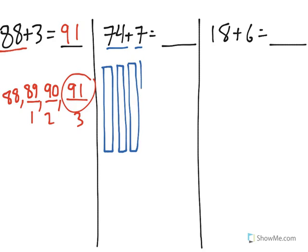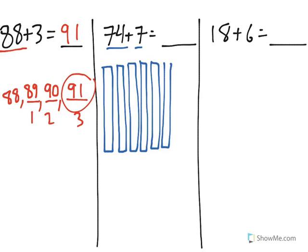10, 20, 30, 40, 50, 60, 70. And I have 71, 72, 73, 74.